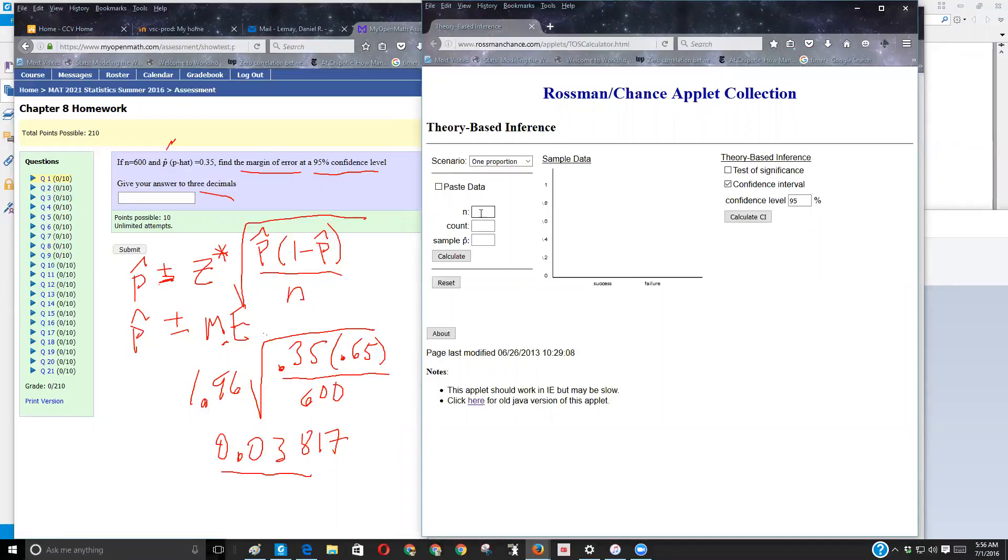I'm working with proportions. They told me I had a sample size of 600. I know the p-hat's 0.35, so I'm going to let it calculate my count for me, and then I want to do a confidence interval, so I got to make sure to check confidence interval, put in your level of confidence, calculate your confidence interval.